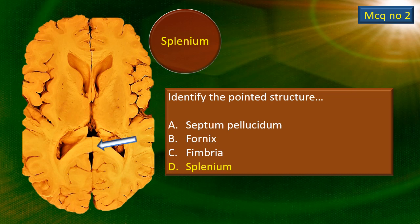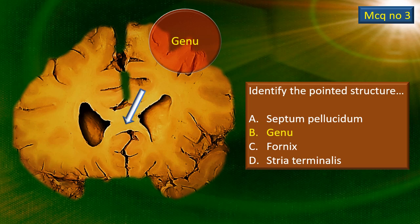MCQ number 2 — we are at the other end of the section. That is the splenium of the corpus callosum, and its lateral extension is the forceps major. The other three options are totally away from this area, so it is very clear — a very simple MCQ. MCQ number 3 — this is a coronal section through the genu of the corpus callosum, and therefore the pointed structure here is the genu.